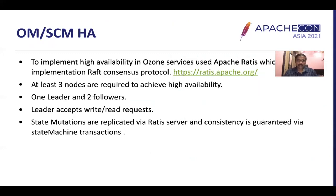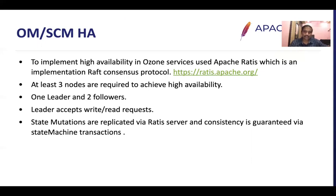Now let's discuss how HA is implemented in Ozone. To implement high availability in Ozone services, we use Apache Ratis, which is an implementation of the Raft consensus protocol. At least three nodes are required: one leader and two followers. The leader accepts both read and write requests. Write requests are replicated from the leader to followers. These state mutations are replicated by the Ratis server from leader to follower, and consistency is guaranteed because all state machine transactions are applied in the same order on all OM, SCM, or DN nodes.